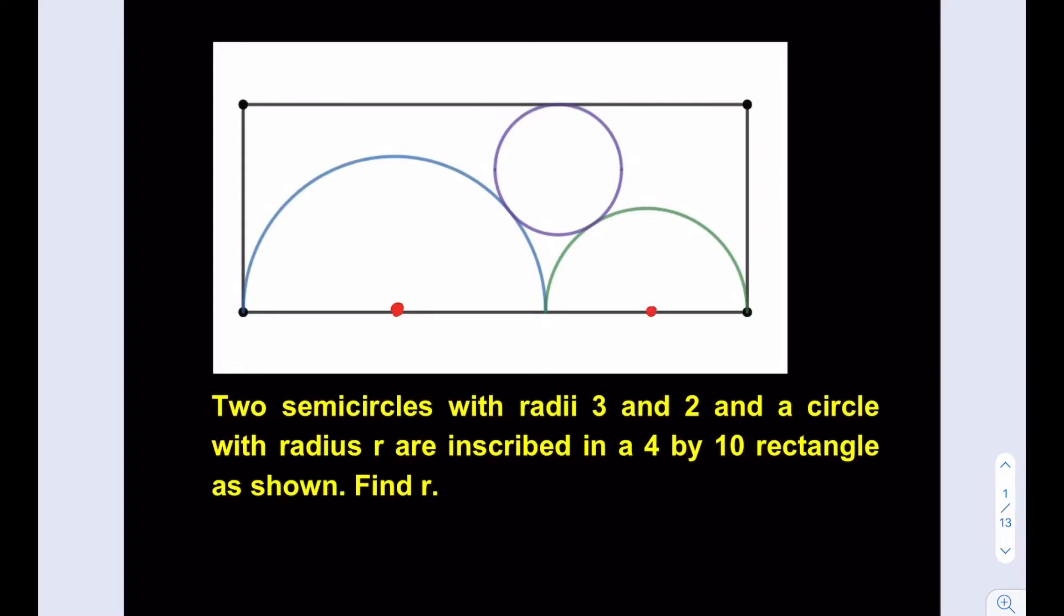Suppose these are the centers. Let's go ahead and connect them. As you know, this type of connection always helps. I'm going to go ahead and connect the centers. Now we know that this is a 3, that's a 3, that's a 2, that's a 2. This is r, we don't know the radius of the circle, we're trying to find it. In order to be able to find r, we're going to need more information. We're going to try to make a right triangle here, and the way to make that is we're going to drop a perpendicular to the base of the rectangle and make sure that passes through the center of the circle.